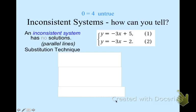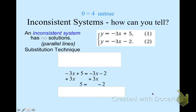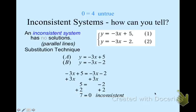Here's what an inconsistent system looks like when solved by substitution. Starting with negative 3X plus 5 equals negative 3X minus 2: adding 3X to both sides, then adding 2 to both sides, gives 7 equals 0 — which is inconsistent, meaning the lines are parallel and there is no solution. Hopefully after today's lesson, if lines are in slope-intercept form, you can identify the same slopes immediately, saving yourself all that work.